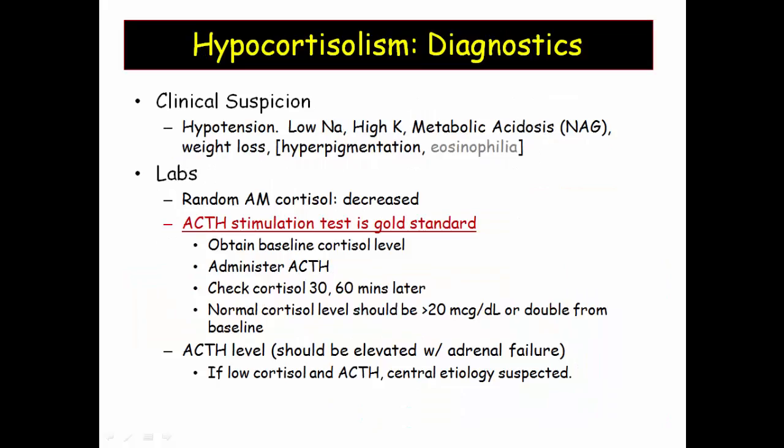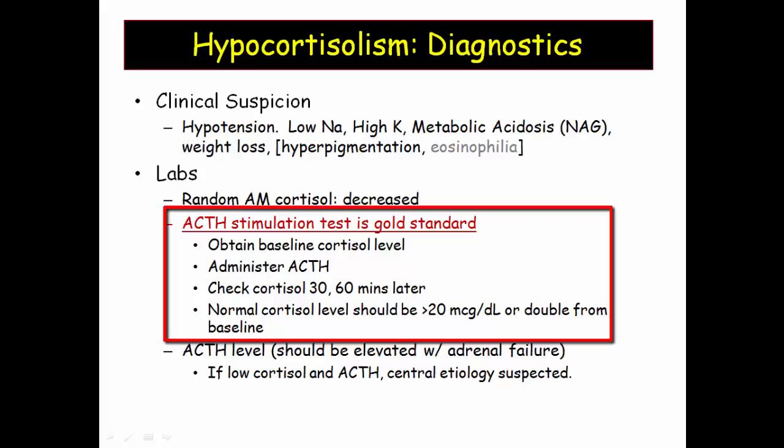Let's make the diagnosis. Clinical suspicion is based on symptoms, physical exam, underlying risk factors such as malignancy, and laboratory abnormalities. Once the diagnosis is suspected, a cortisol level can be obtained, preferably in the morning. However, this is not the gold standard. On Step 1, if they give you a low cortisol value, put it in the bank — they're telling you the patient has hypocortisolism.